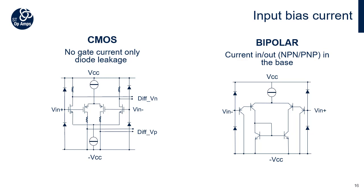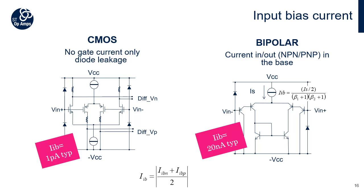The input bias current parameter IIB is defined as the average of the current into the two input terminals, with the output at a specified level. The input circuitry of all op-amps requires a certain amount of bias current to operate properly. CMOS and JFET architectures have a much lower input current than a standard bipolar. For a bipolar architecture, part of the current from the current source flows into the input with a ratio of 1 per β². The CMOS transistor is driven by a gate, and there is insignificant current inside. The small input current in CMOS technology is mainly due to leakage of the ESD diode.